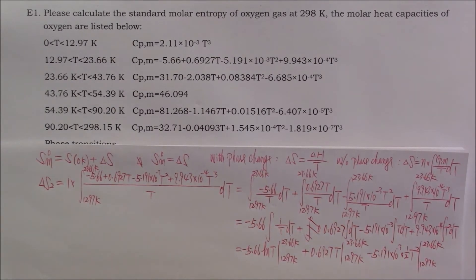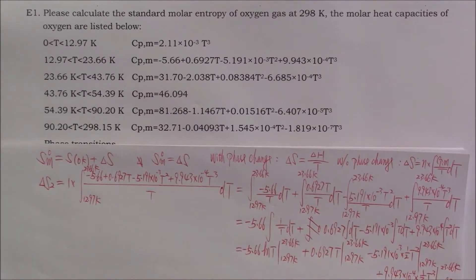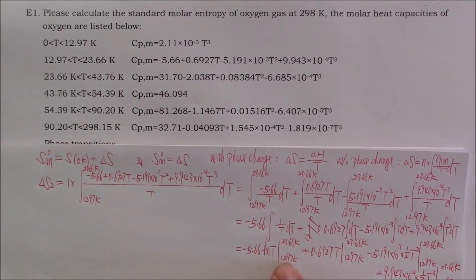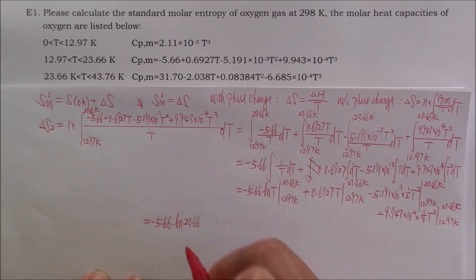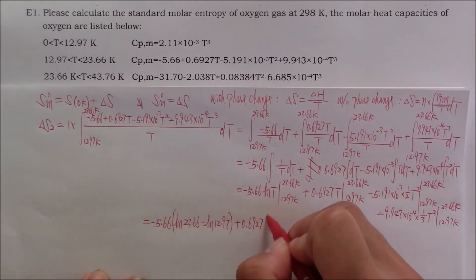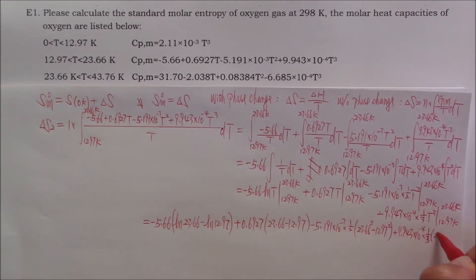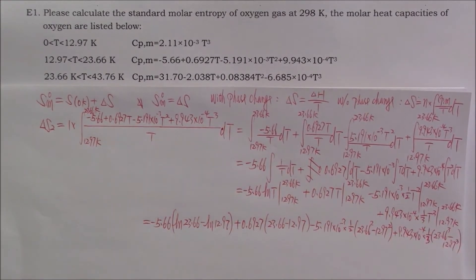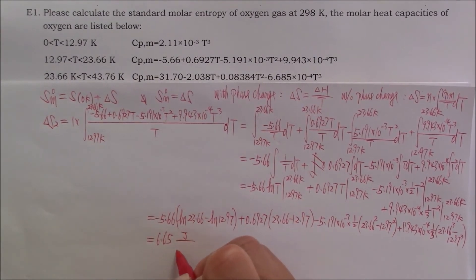I'm running out of space for the last term. Let me put it here. Then, we need to plug in the initial temperature and the final temperature for each expression. If you plug all the numbers into a calculator, you will get an answer, which is 6.65. And this is joule per mole per Kelvin.